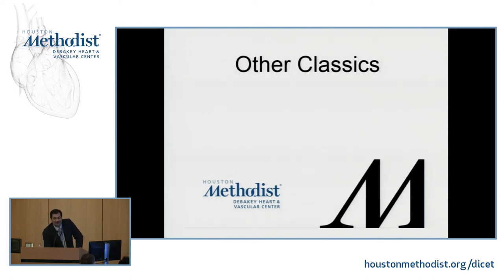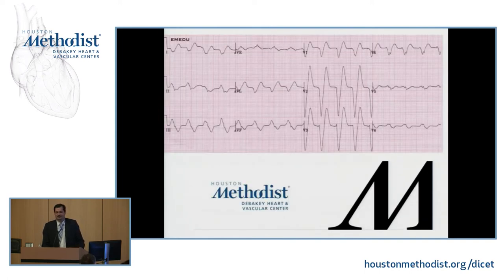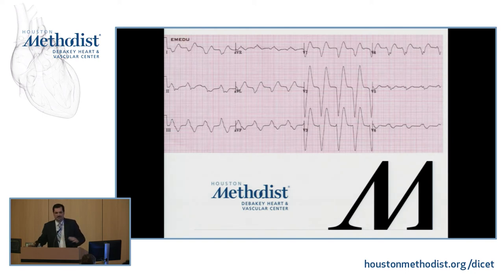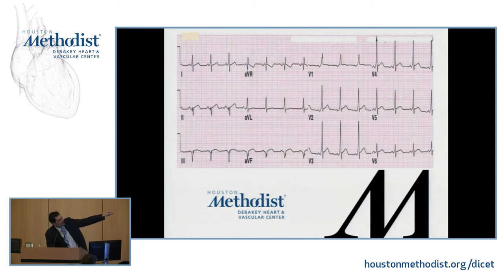A couple more classics to finish. This is hyperkalemia — significantly widened QRS. Take a normal EKG and stretch it out, and that's how hyperkalemia looks: flattened P wave, widened QRS, and peaked T waves. And the last one you should know is WPW — Wolff-Parkinson-White. As you can see, there is pre-excitation before the QRS and a short PR interval. This is another condition associated with tachycardia or cardiac arrest. All these findings are suggestive of WPW.